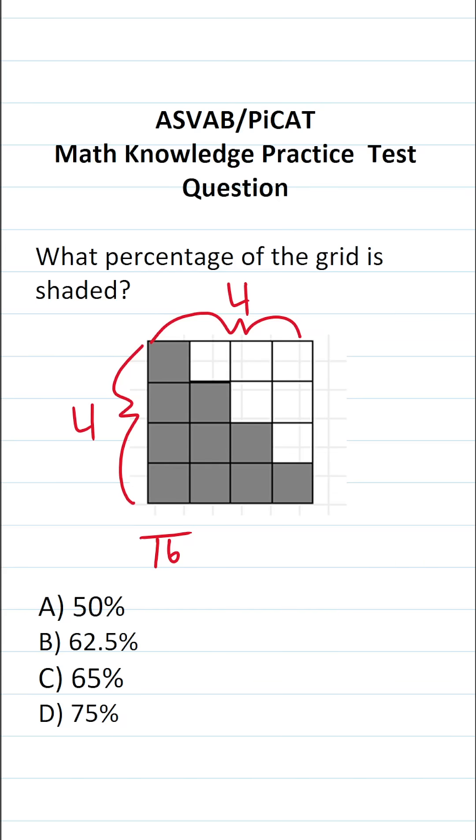How many of them are shaded? Well, we have 4 shaded in this first column, 3 shaded in this second column, 2 shaded in this third column, and 1 shaded in this fourth column. 4 plus 3 plus 2 plus 1 is going to be 10. So 10 of the 16 squares in the grid are shaded.